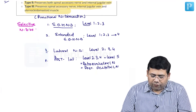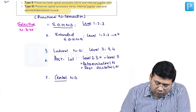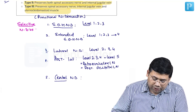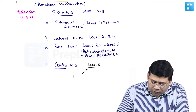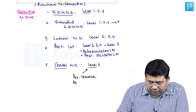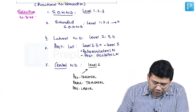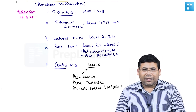We also have central neck dissection. In central neck dissection, the important component is level 6. The level 6 lymph nodes include pretracheal, paratracheal, and pre-laryngeal lymph nodes. The pre-laryngeal group of lymph nodes are also known as the Delphian group of lymph nodes. This concludes the topic of neck dissection.